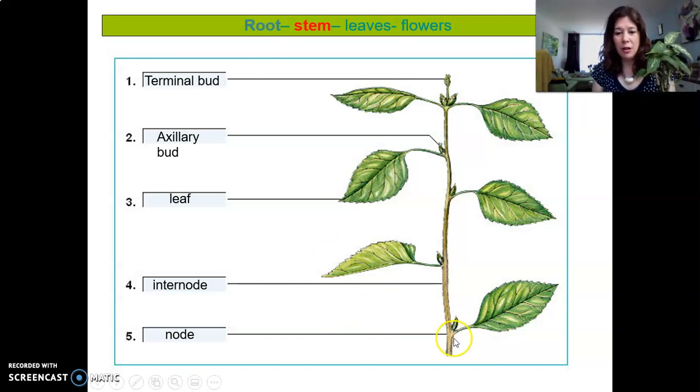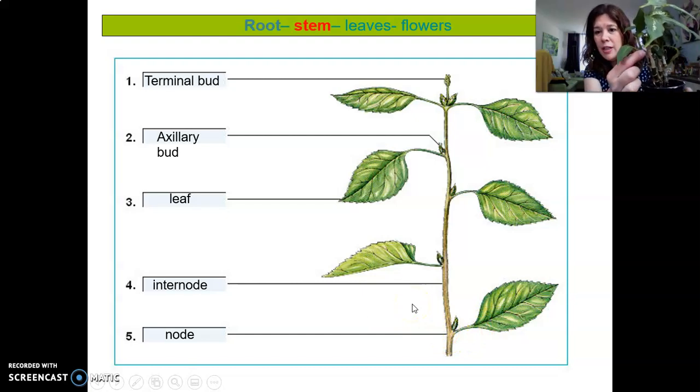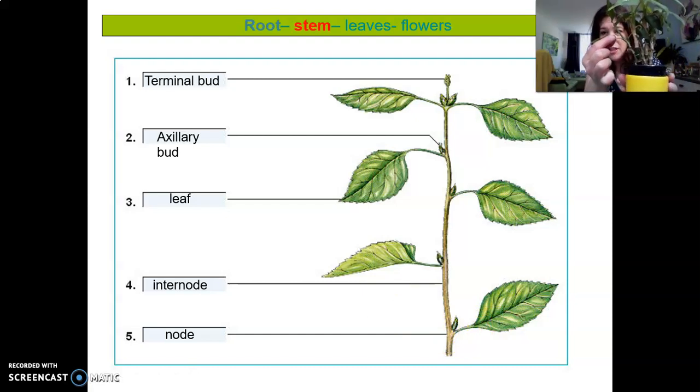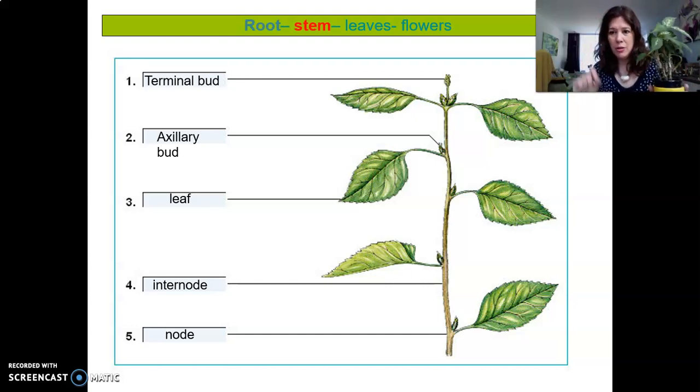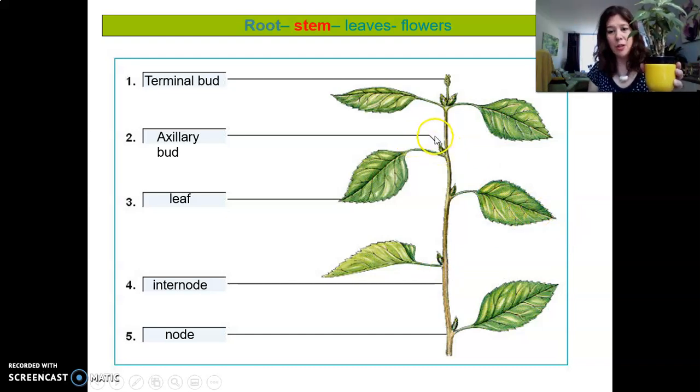And that's because of the node. And the node is the place where the leaf attaches to the stem. So that is a node over there. There's two nodes. And in between the nodes you have the internode. And on top of the node you have the auxiliary bud where new side branches and new leaves can sprout. And then of course we have the terminal bud.